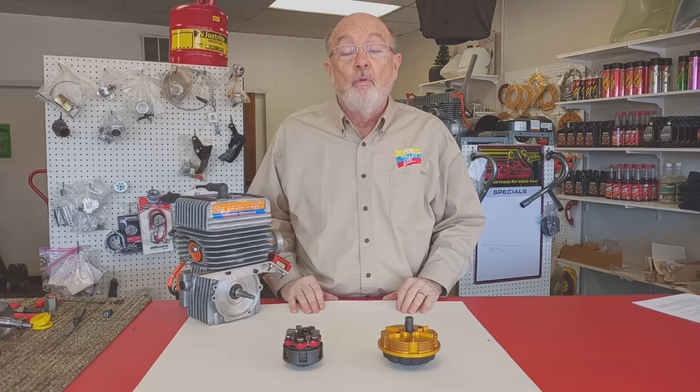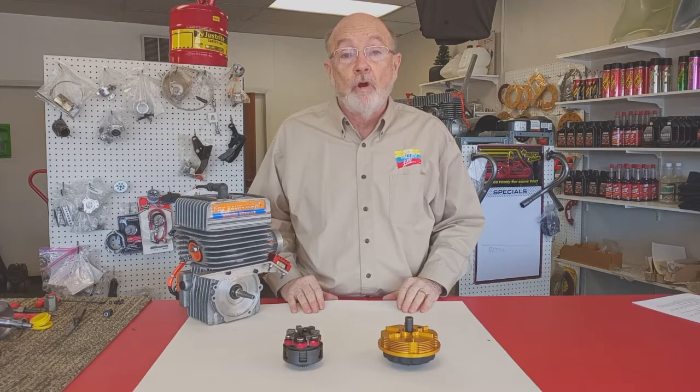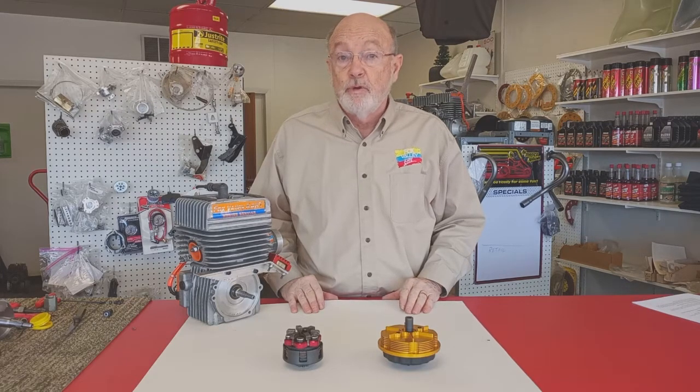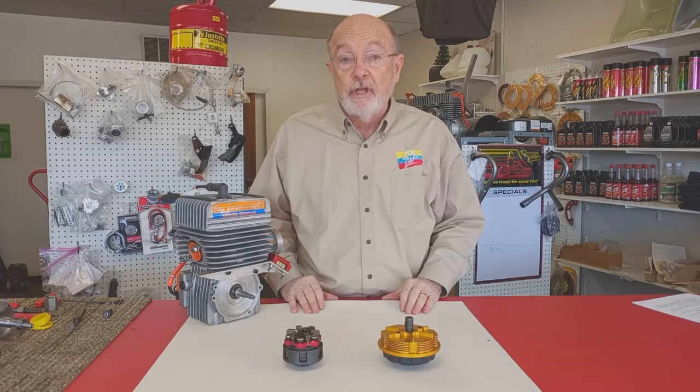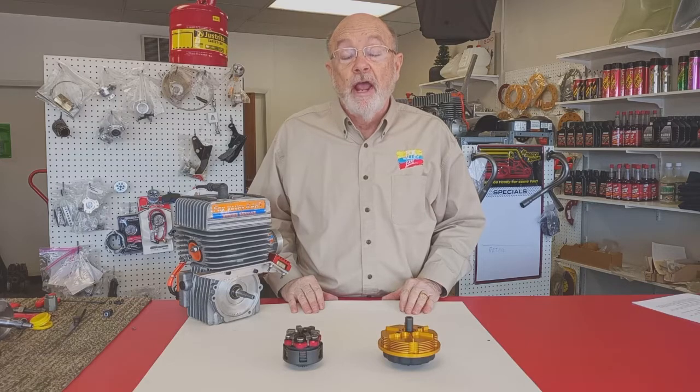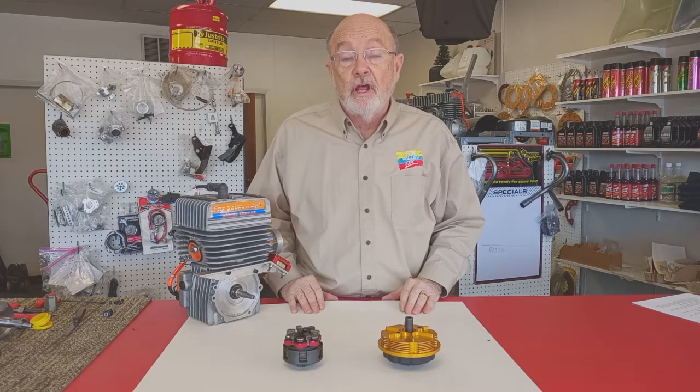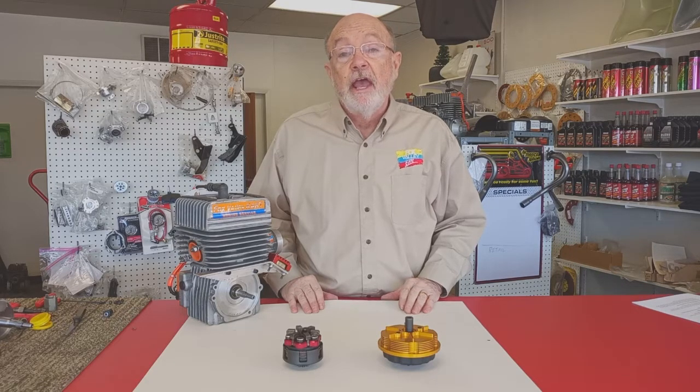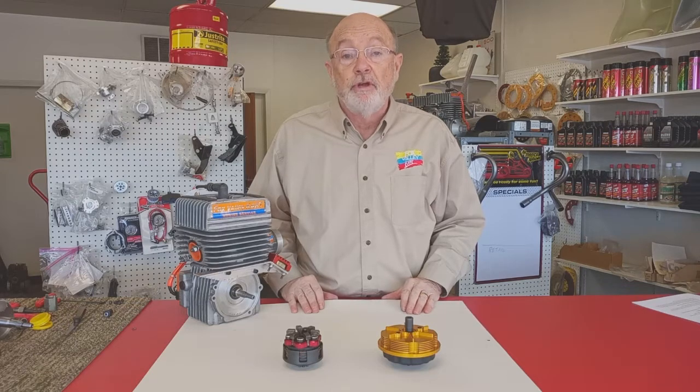In the last video, we talked a lot about how the clutches work, and we specifically concentrated on the bully clutch for the jackshaft. This time, we're going to look a little harder at the engine mounted clutches, the L&T and the Horseman slash Patriot type clutches.